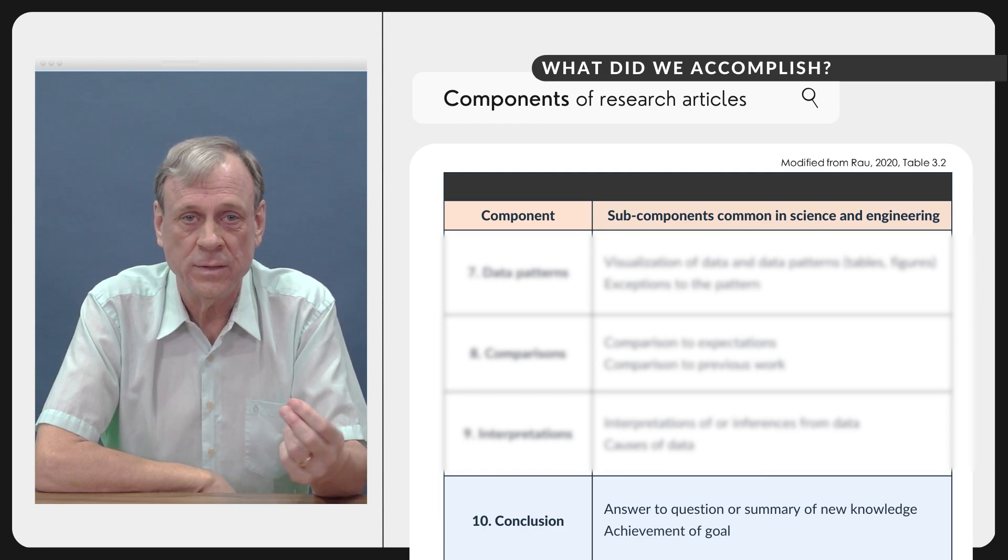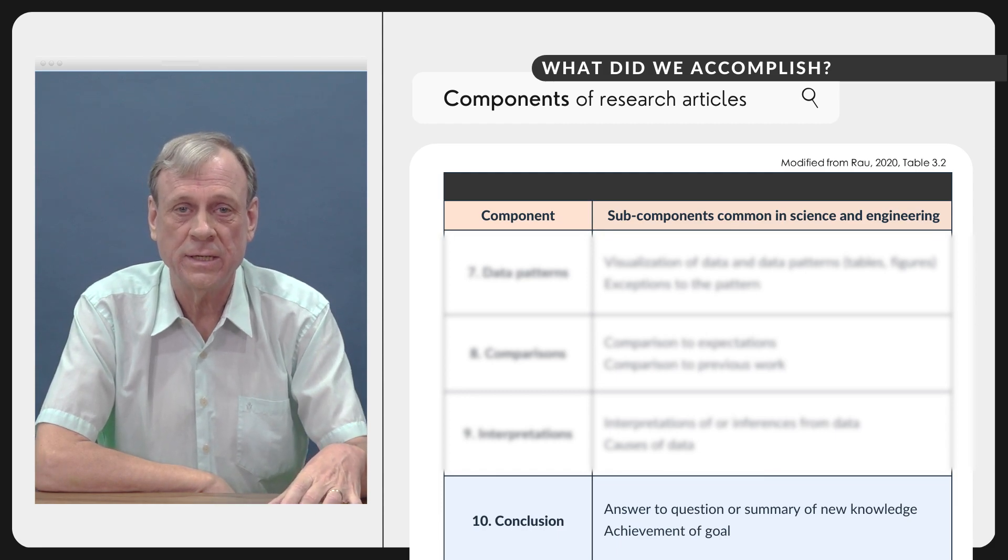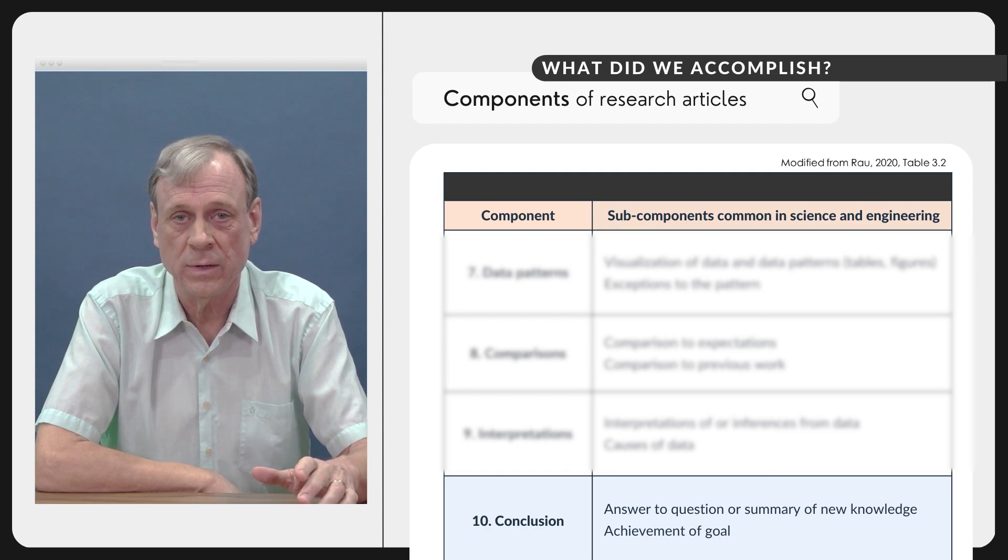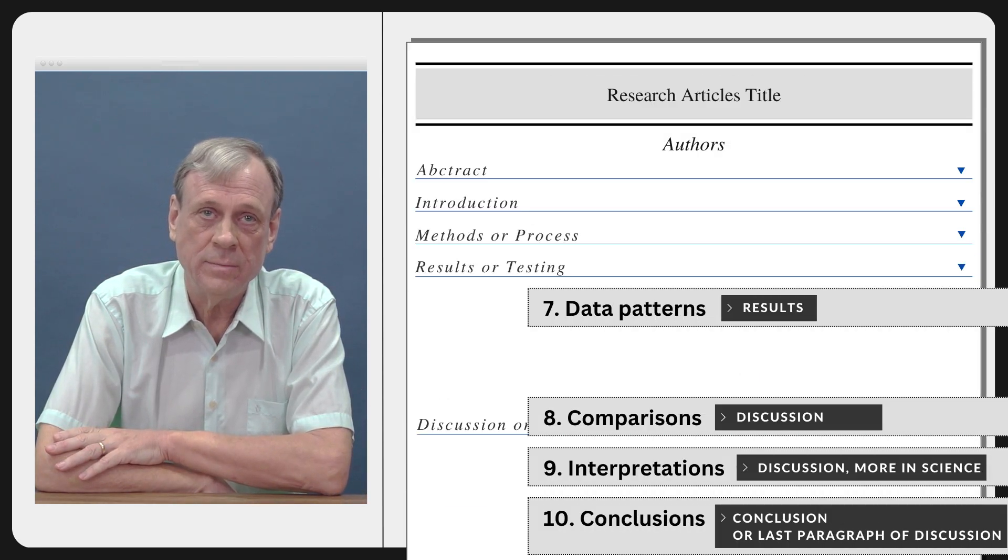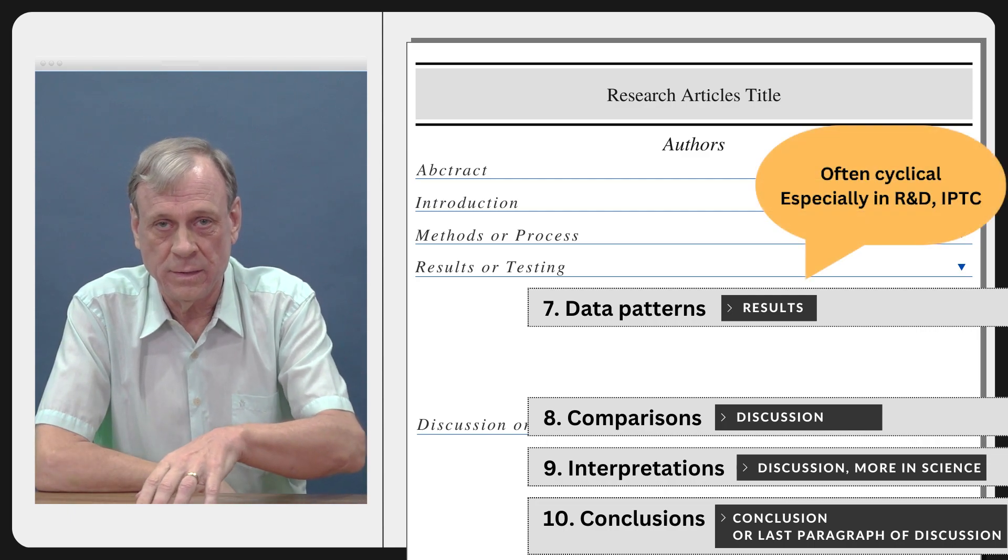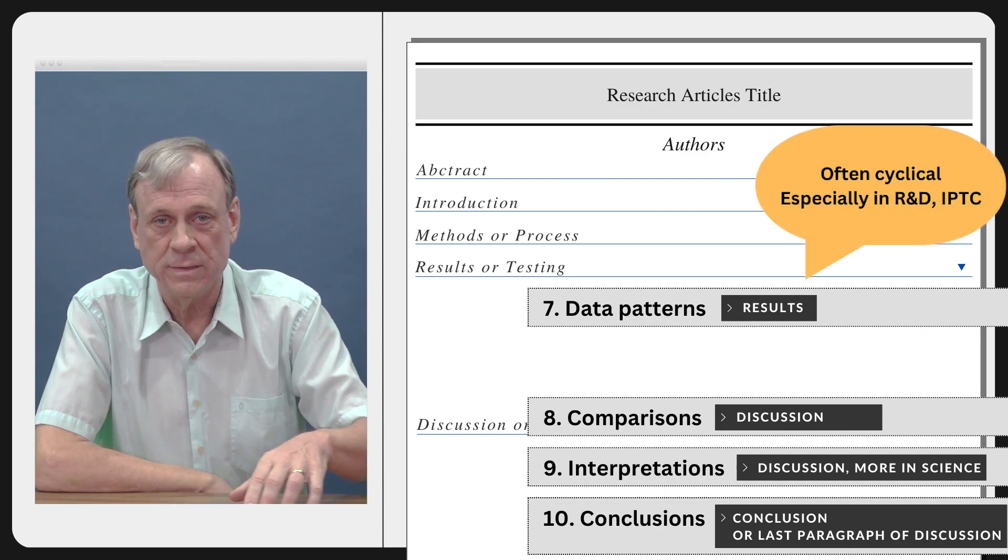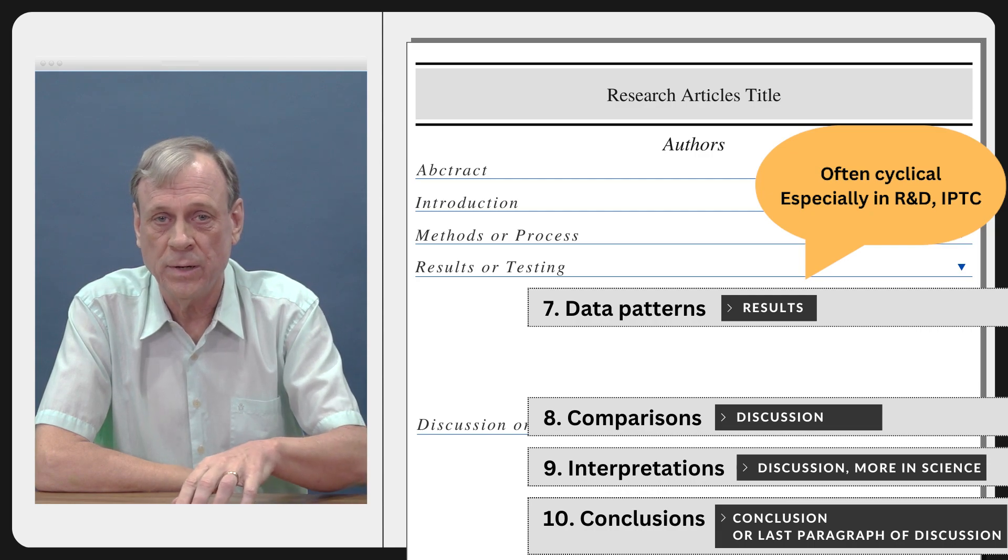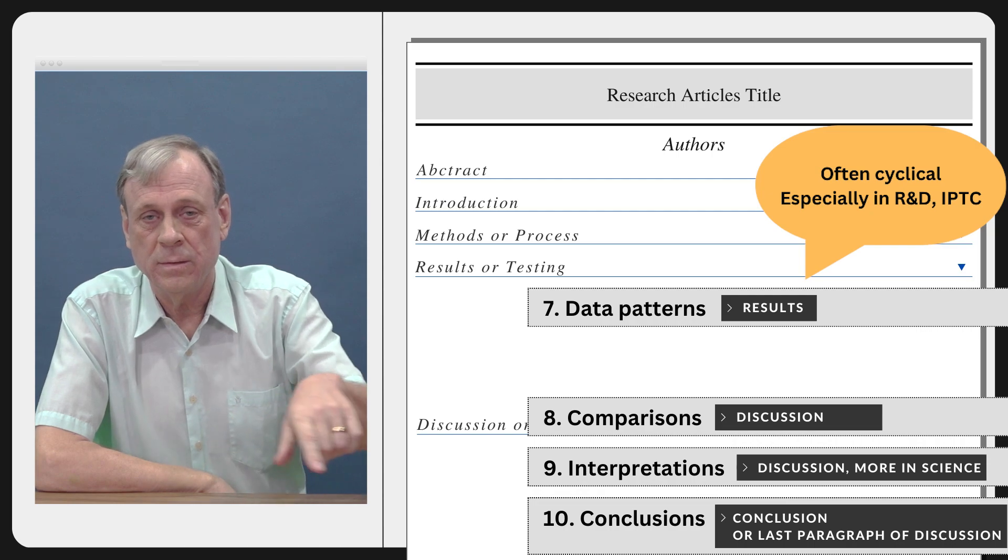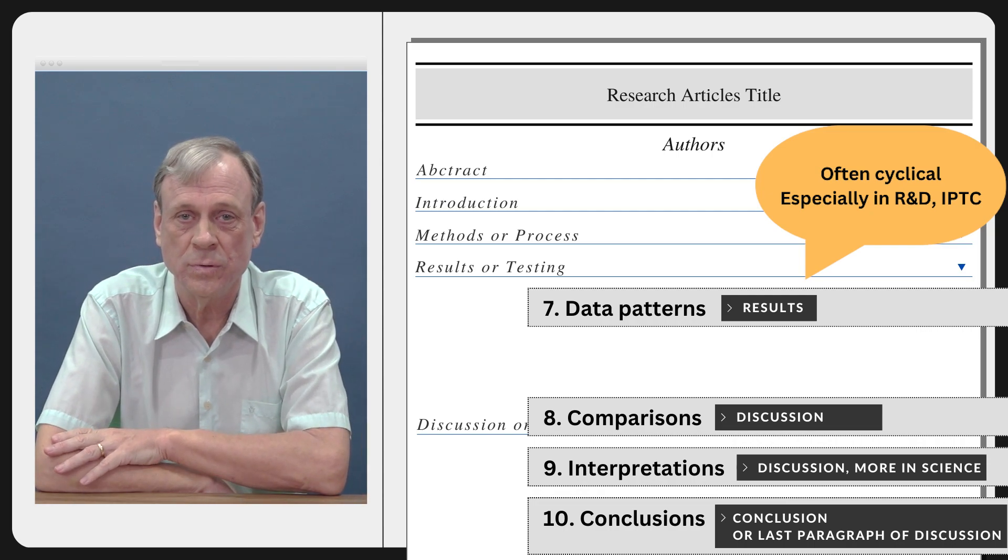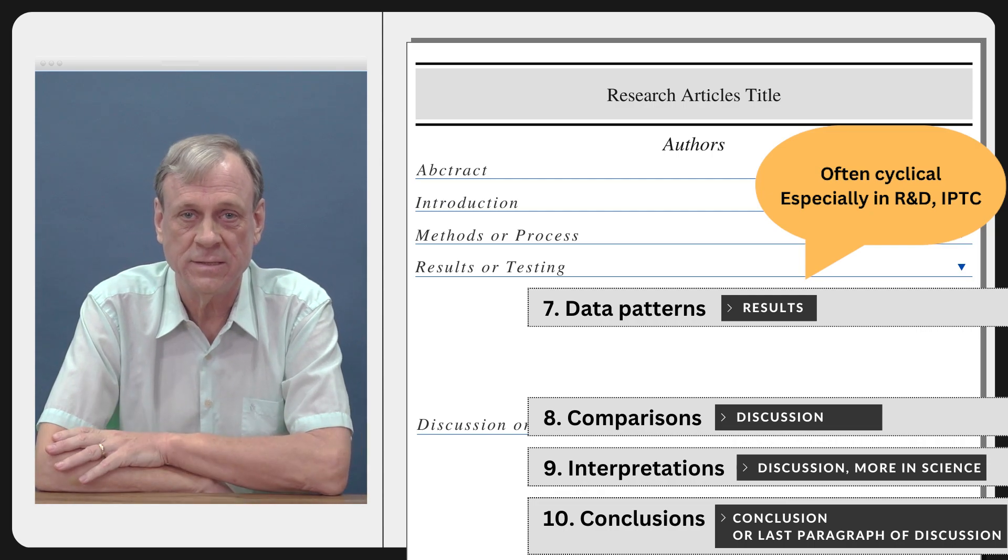That's again found either in a separate conclusion section or in the last paragraph or two of the discussion. And sometimes again in engineering you'll find the testing method, the data, and the comparison and interpretation cycling several times through as it talks about each different test that was done.